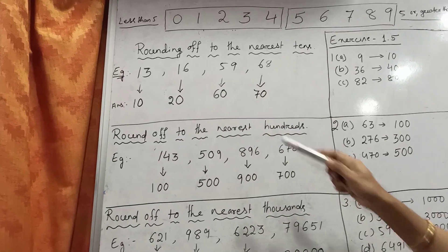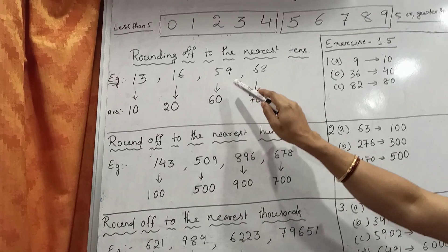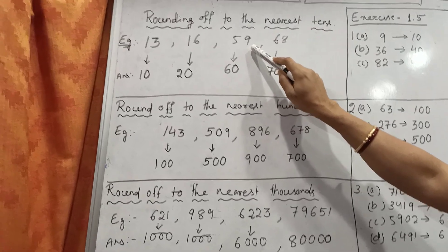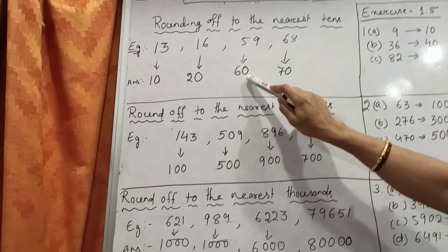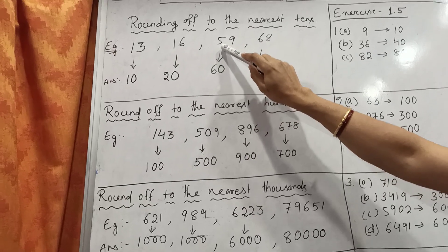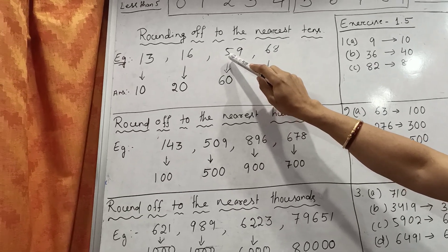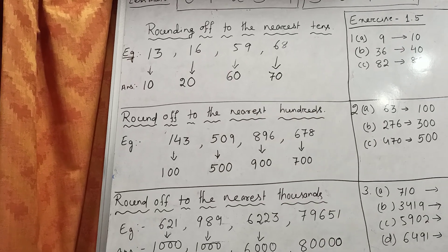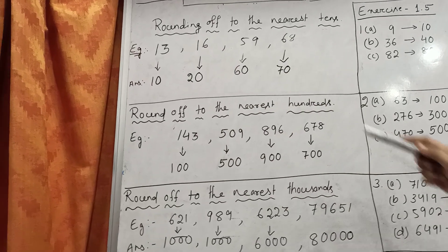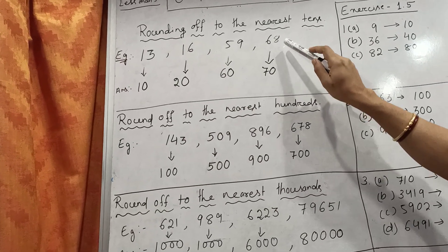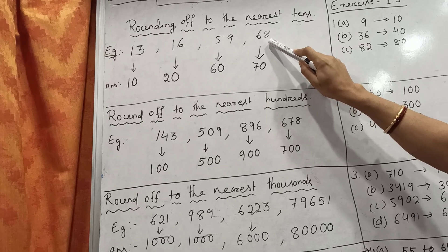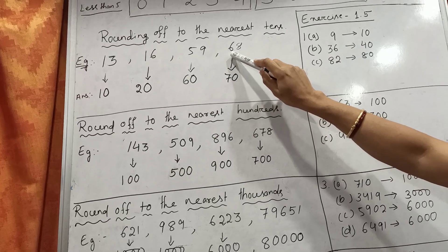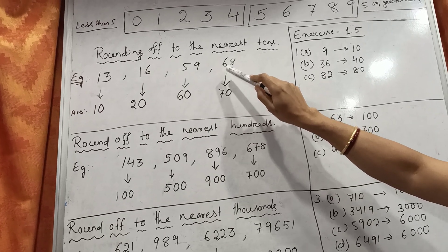The next example is 59. The units digit is 9, which is more than 5. In the units place we write 0, and the tens digit is increased by 1, so 5 plus 1 is 6. The nearest 10 of 59 is 60. The next example is 68. The units digit is 8, which is more than 5. So the units place becomes 0 and the tens digit is increased by 1, giving 7. The nearest 10 of 68 is 70.